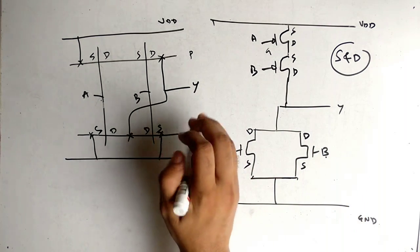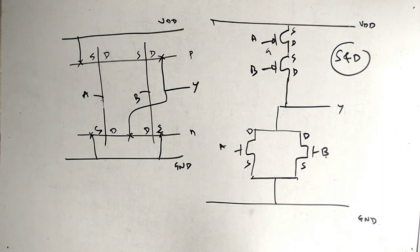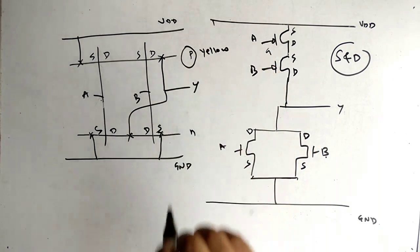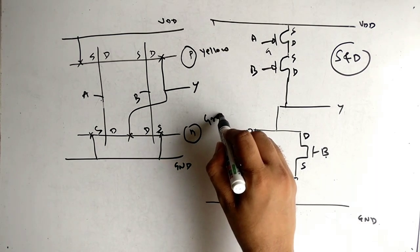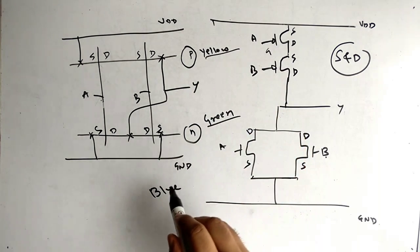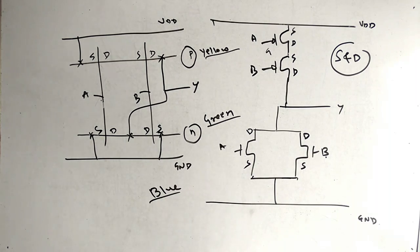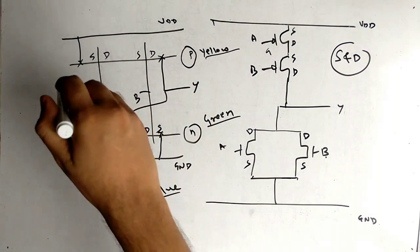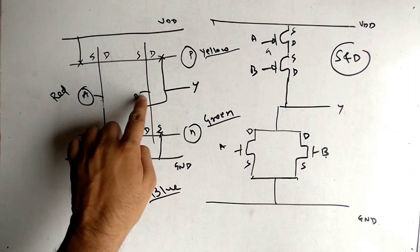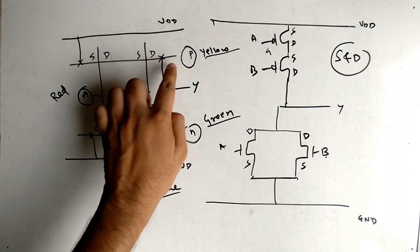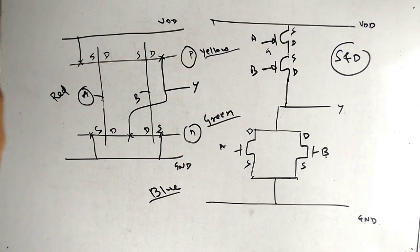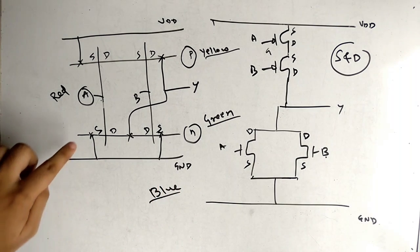Now let's talk about the color code. P diffusion should be yellow, N diffusion should be green, VDD and ground lines are blue. Using RGB — R is for the polysilicon line which is red. The vertical polysilicon lines with small horizontal extensions are red; the PMOS diffusion horizontal line is yellow; the NMOS diffusion line is green; VDD and ground lines are blue. The connections (the X marks) are in black.